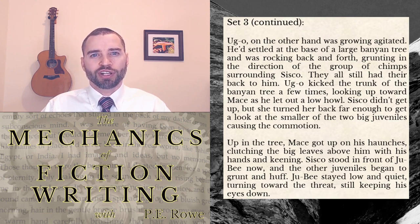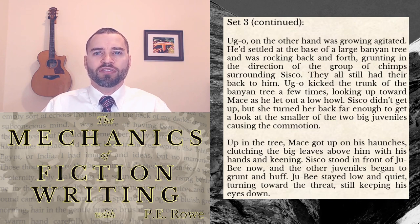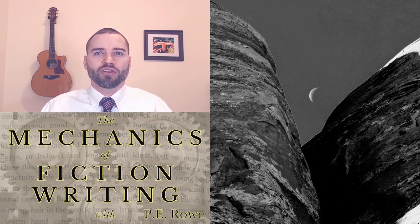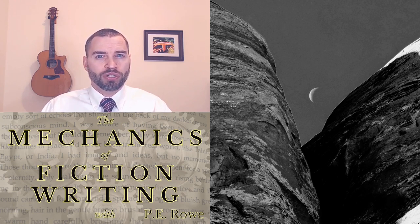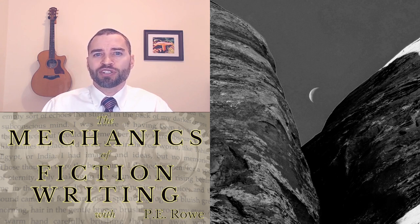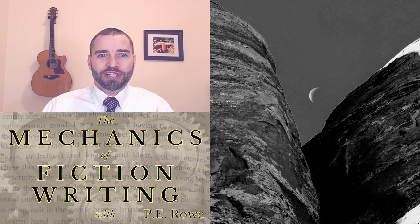Sisko didn't get up, but she turned far enough to get a look at the smaller of the two big juveniles causing the commotion. Up in the tree, Mace got up on his haunches, clutching the big leaves above him with his hands and keening. Sisko stood in front of Juby now, and the other juveniles began to grunt and huff. Juby stayed low and quiet, turning toward the threat, still keeping his eyes down. If I've done my job correctly, you probably think you have an idea of what's going to happen now. But if I continued by providing cues that wildly deviated from what you're expecting, you'd probably not like that at all. I could make Mace lumber down to the bottom of that banana tree and sing 'Bridge Over Troubled Water' in the key of G, and there's not a thing you could do except put the book down. The cues of a plot need to cohere.